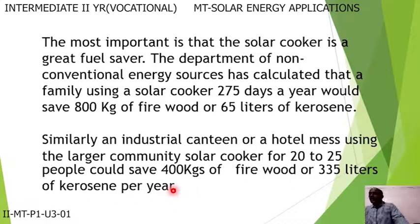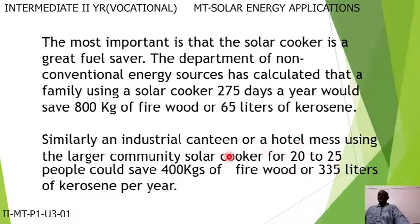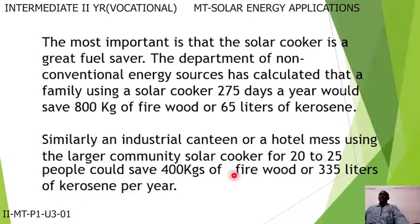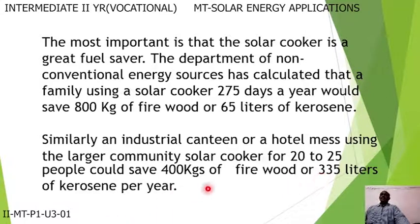For a community solar cooker cooking for 20 to 25 people, we need 400 kilograms of firewood or 335 liters of kerosene per year. By using solar energy instead, we can save all of that.